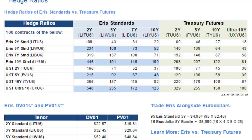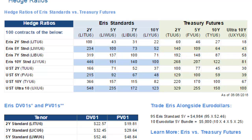For example, if you wanted to compare how many 10-year Treasury Futures you would need to hedge 100 Eris 7-year standards to create a DVO-1 neutral portfolio, then you would scroll to the Eris 7-year and scroll over to the 10-year Treasury Futures.